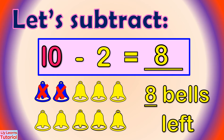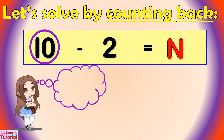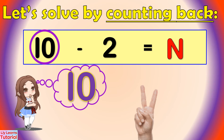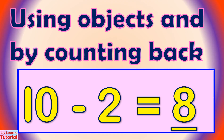Therefore, 10 minus 2 equals 8. We can also solve this by counting back. We put the bigger number in our head — that is 10 — then the smaller number on our fingers — that is 2. We count back two times from 10: 10, 9, 8. The answer is 8. We came up with the same answer using two different strategies: using objects and by counting back.